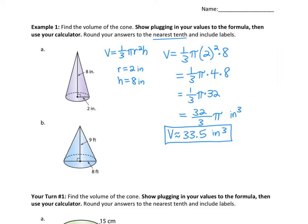For part B we do the exact same thing. Let's identify our parts. The full length across is labeled as 8 feet — that's the diameter. So the radius is half of that: 4 feet. Make sure you're not using 8 in the formula without halving it first. The height is 9 feet.